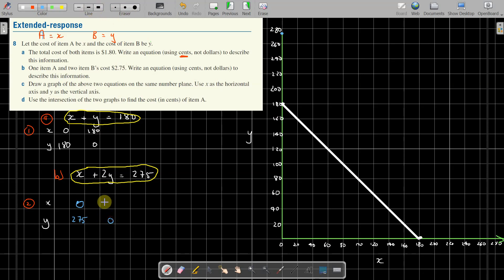And then, if Y is zero, X is 275. Oh no, I just made a mistake. I just realized, okay, let's go back.